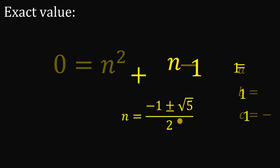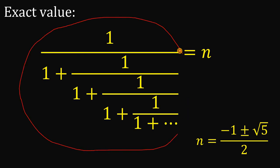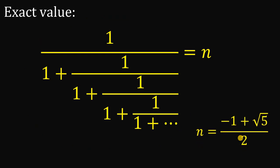So we have two possible values for n. Going back to our original expression — 1 over 1 plus 1 over 1 plus, and so on and so forth — this expression cannot be equal to a negative number. Therefore we can disregard the negative value of n. Thus, n must be equal to negative 1 plus square root of 5, over 2.